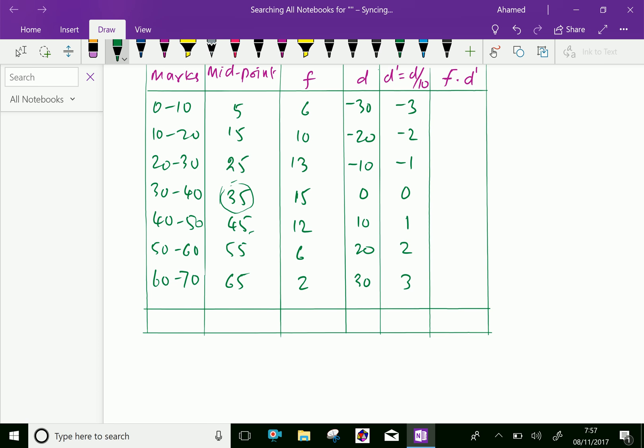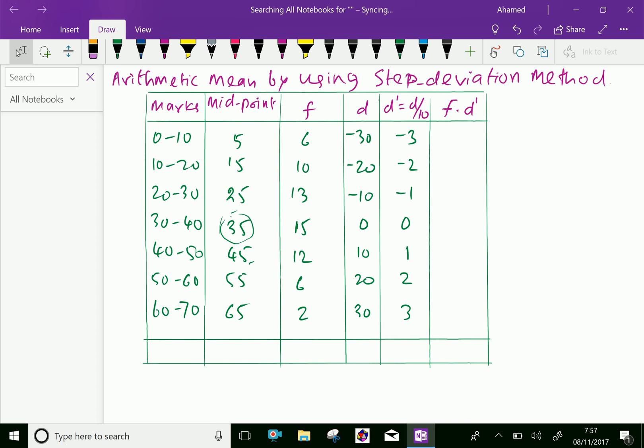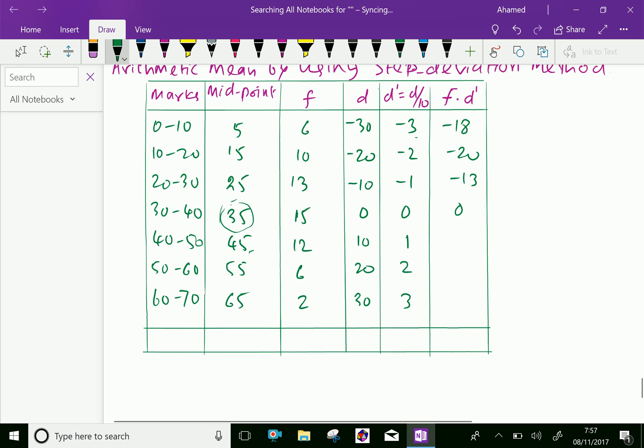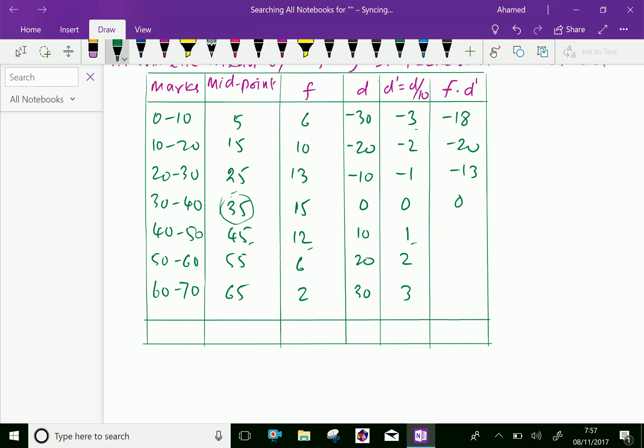Now we find f into D'. f is 6, so 6 into minus 3 is minus 18, 10 into minus 2 is minus 20, 13 into minus 1 is minus 13, 15 into 0 is 0, 12 into 1 is 12, 6 into 2 is 12, and 2 into 3 is 6.